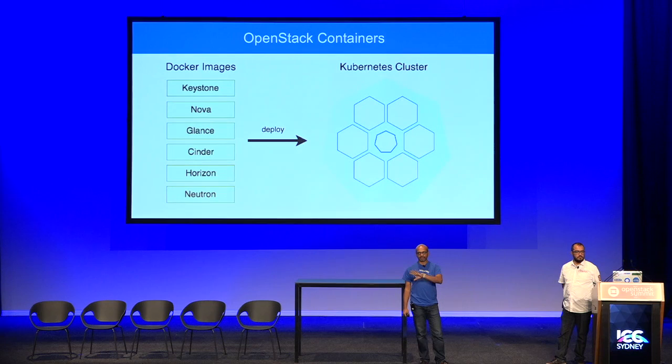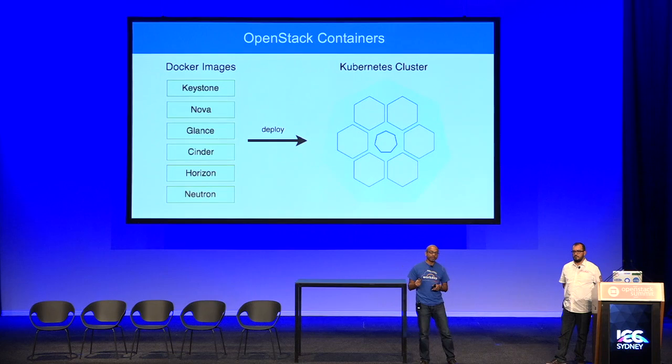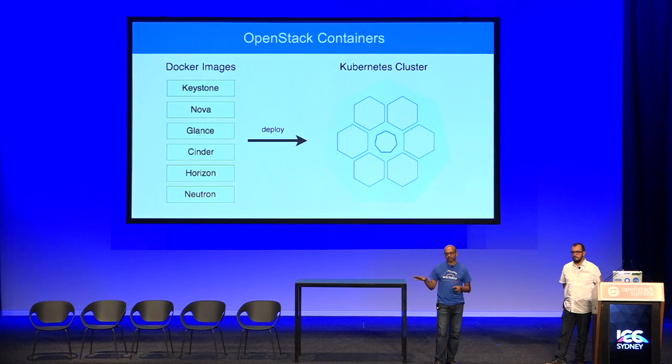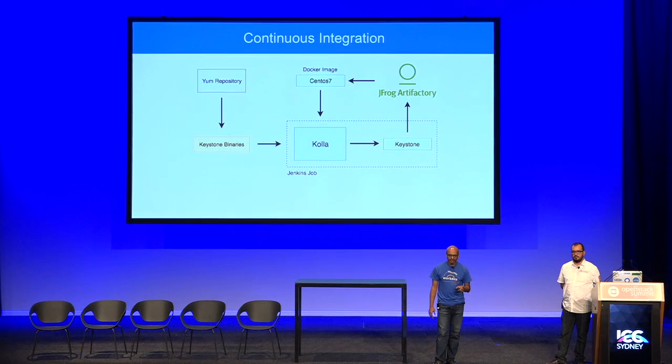Our approach was to build OpenStack containers. We used OpenStack Kolla to containerize each OpenStack service — Keystone, Nova, Glance, and the rest — and then we use OpenStack Helm to provision them on a Kubernetes cluster.